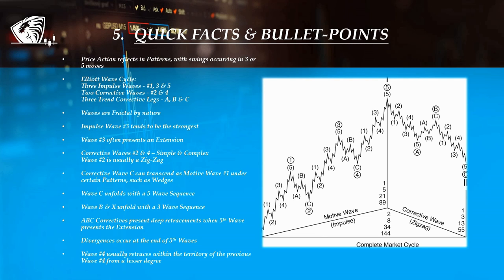Corrective waves 2 and 4 can have two forms. Simple, formed by three moves, and complex, formed by 5 moves. And if wave 2 is simple then wave 4 will be complex and vice versa, due to the law of alternation. Usually corrective wave 2 unfolds with zigzag structure.